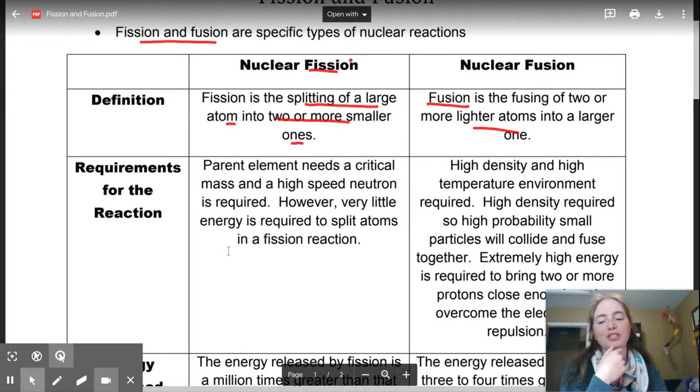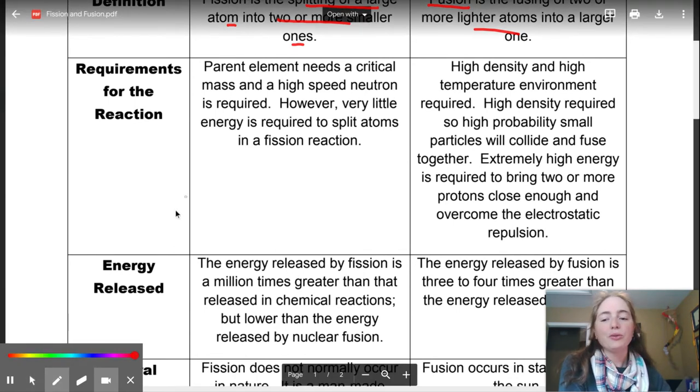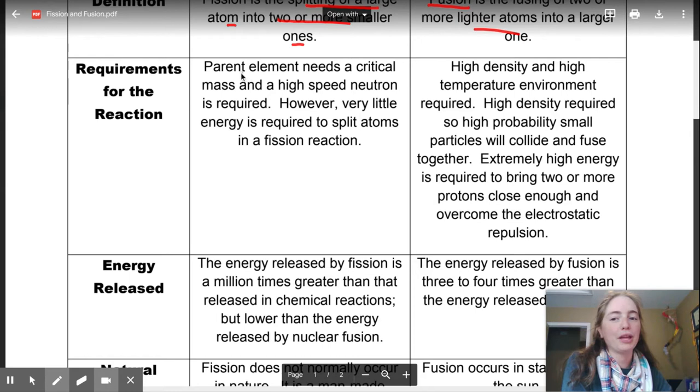With nuclear fission, what has to happen is the parent element has to be big enough, because if it's not big enough, and generally you also want it to be radioactive in general. Radioactive nuclei tend to break apart, and most really big nuclei are radioactive anyway. And then you're going to need a high-speed neutron fired at it to bust apart that particular nuclei. But you don't need much energy in order to break this apart.